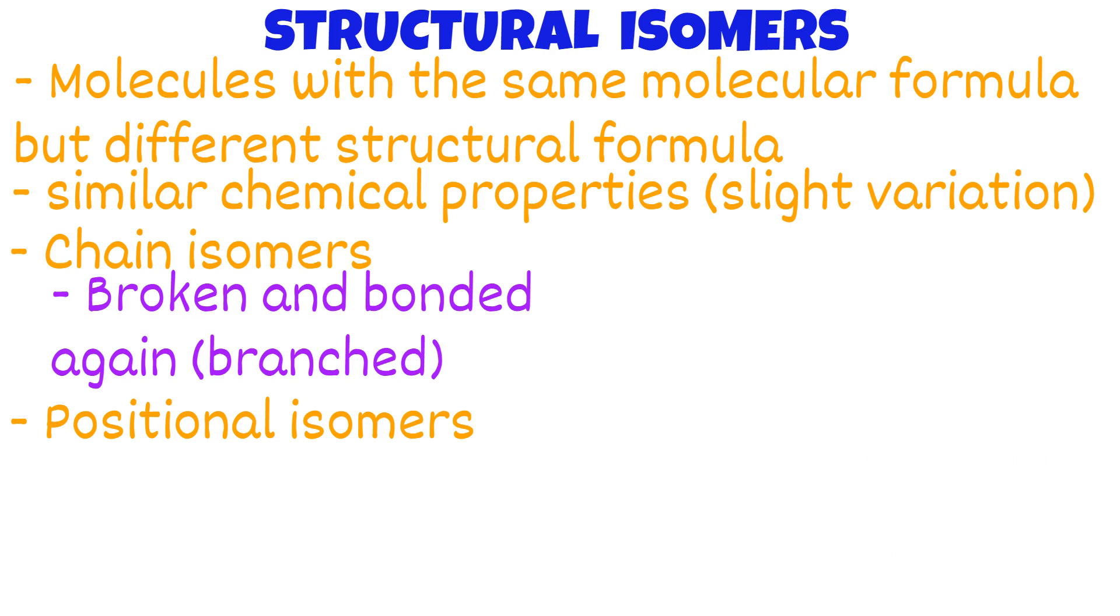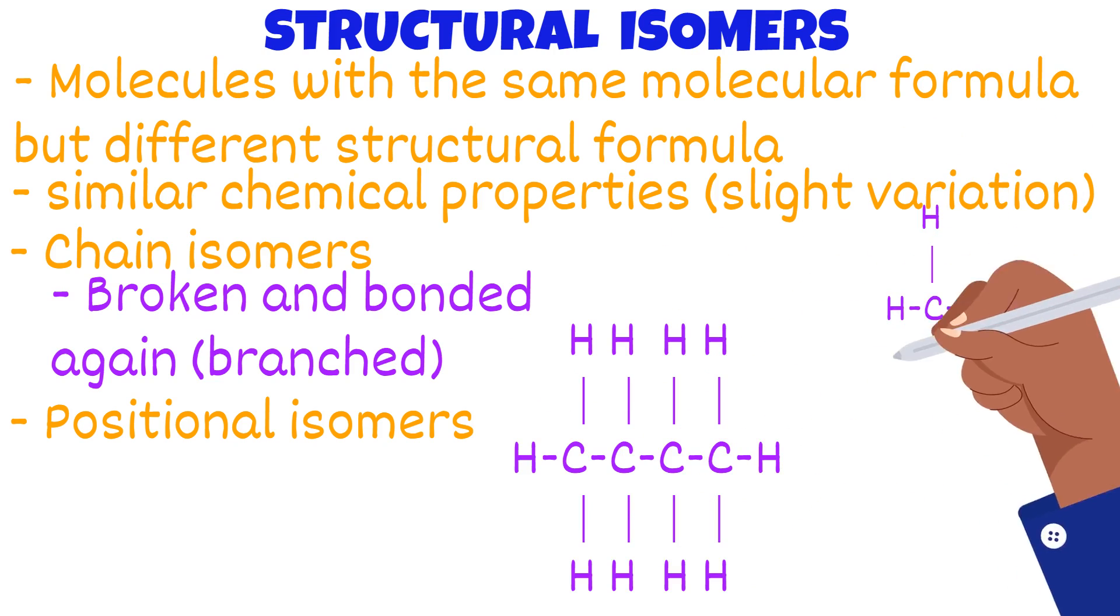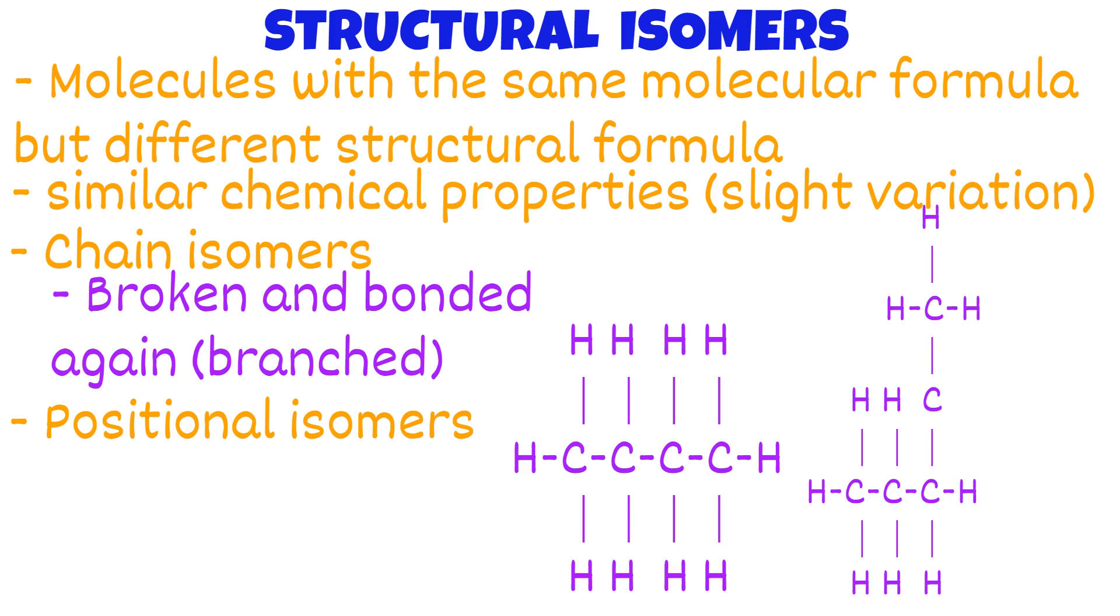To end, let me show you some tables with the molecular formula, displayed formula, and the name for some alkenes and alkanes. But before that, a quick note. When finding isomers, don't get too excited and do this. This is not an isomer. It's just the bent version of the same molecule.